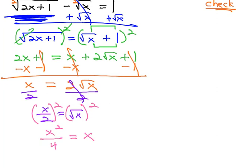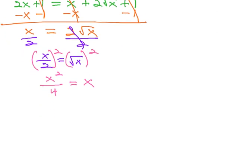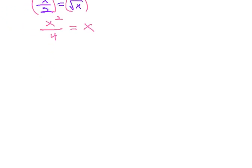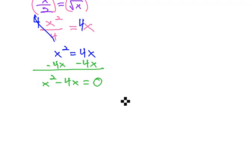I'm running out of room, so let's scroll down a little bit. Let's clear that fraction by multiplying both sides by 4, gives us x squared equals 4x. And again, because we have an x squared in the problem, we need to get the equation equal to 0 by subtracting 4x. This gives us x squared minus 4x equals 0.